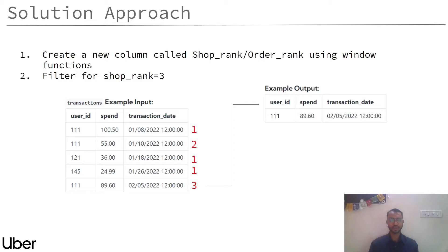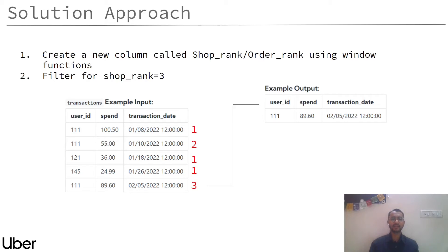The solution is in two steps. The first step is to create an order rank column using window functions, and the second step is just to filter for the order rank equal to three. The rank column needs to be partitioned by user_id, because for every user_id the rank column should reset. So this is my first transaction of user 111, the second, and the third — and this is what the output looks like.